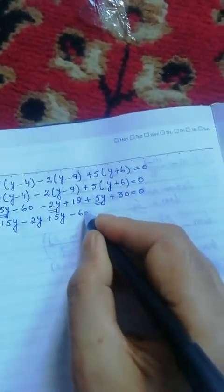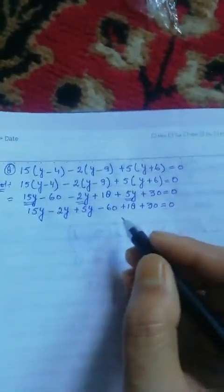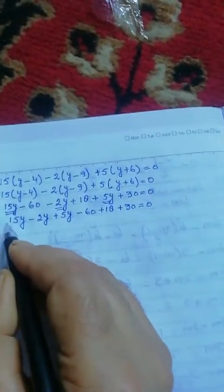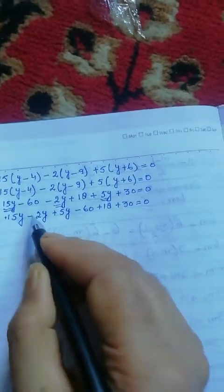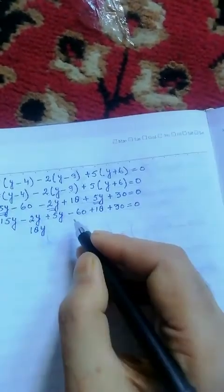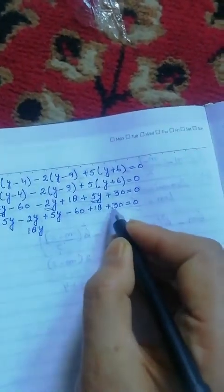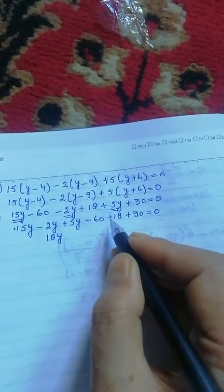For the constants: minus 60 plus 18 plus 30. Calculating: minus 3 plus 18 gives minus 12. So we get 18y minus 12 is equal to 0.